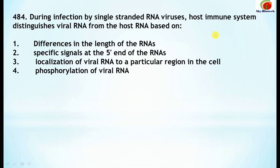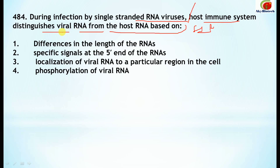Question 484: during infection by single-stranded RNA viruses, how does the host immune system distinguish viral RNA from host RNA? It is based on specific signals at the 5' end of the RNA. This is the correct option.